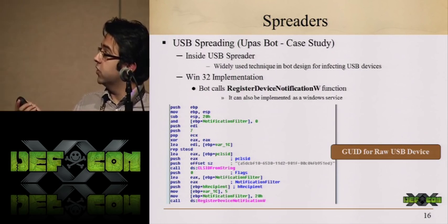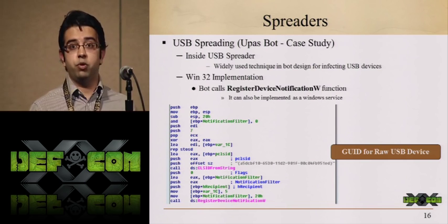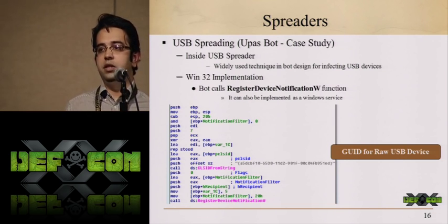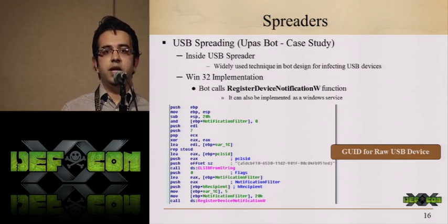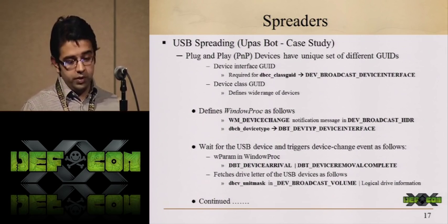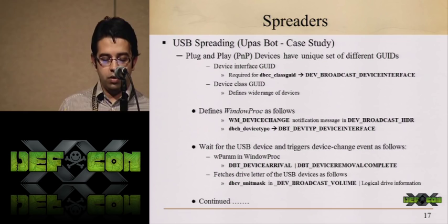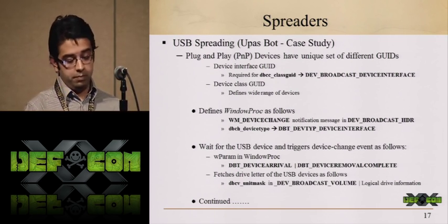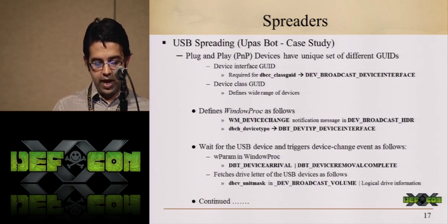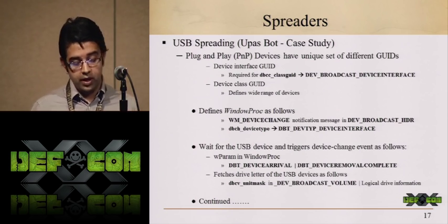Looking at the disassembly screenshot, the bot takes a CLSID parameter pointing to the USB device and calls the RegisterDeviceNotification function, which notifies when a device has been inserted. In the USB spreading mechanism, the bot writes a USB monitoring module that creates a Windows procedure and looks for the WM_DEVICECHANGE notification via the DEV_BROADCAST_HDR. It checks for different interfaces. When a USB arrives — DBT_DEVNODEARRIVAL — the bot gets the notification.